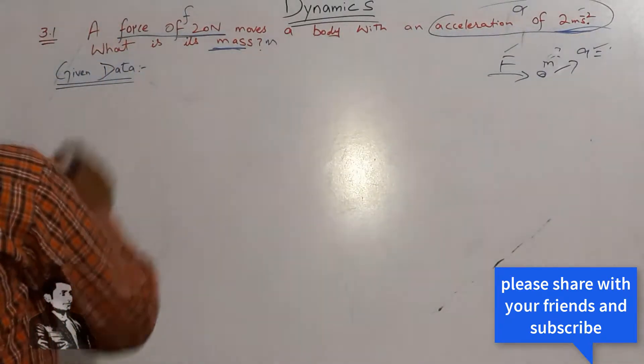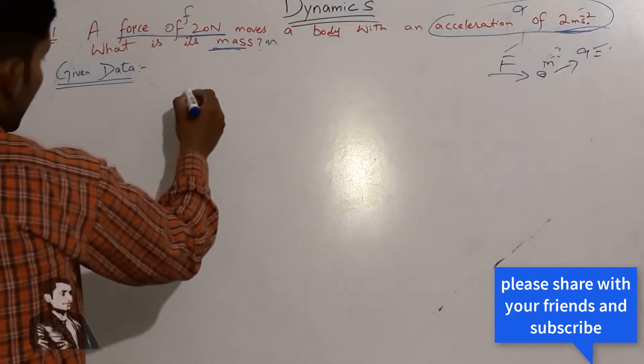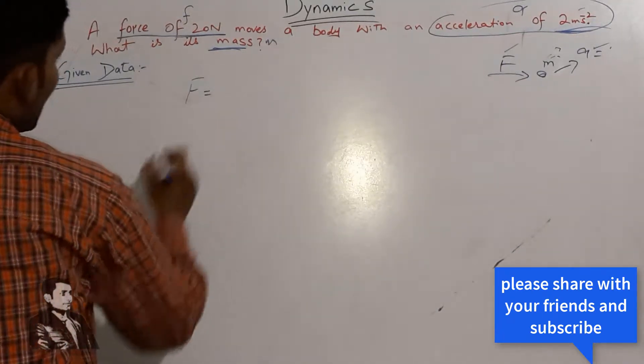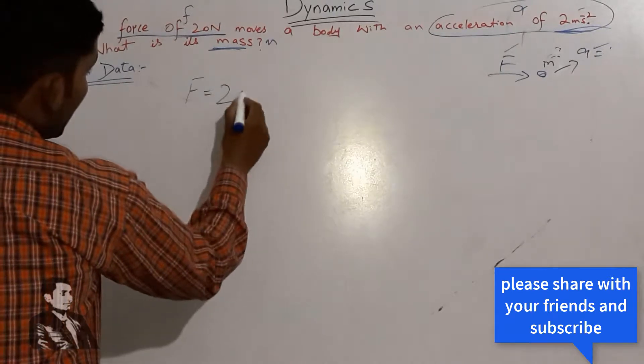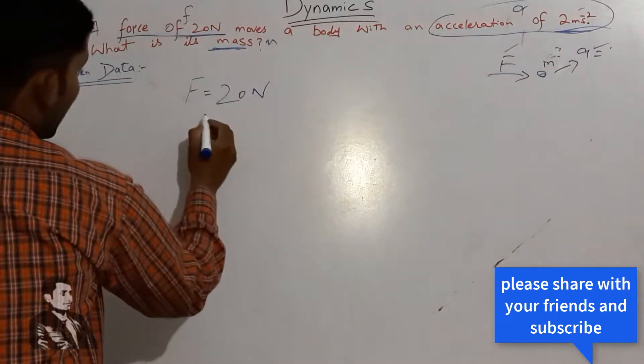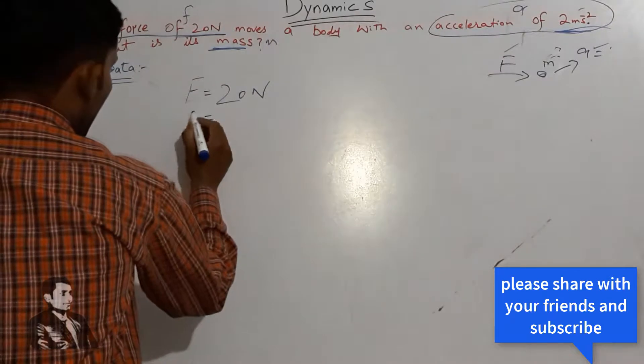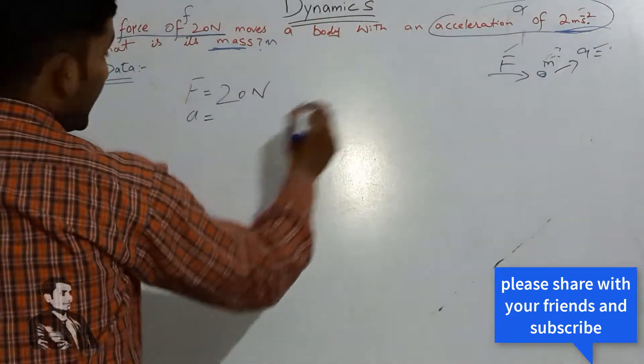So let's start with the given data. We have force which is 20 Newton. Next is acceleration, we denote it a.